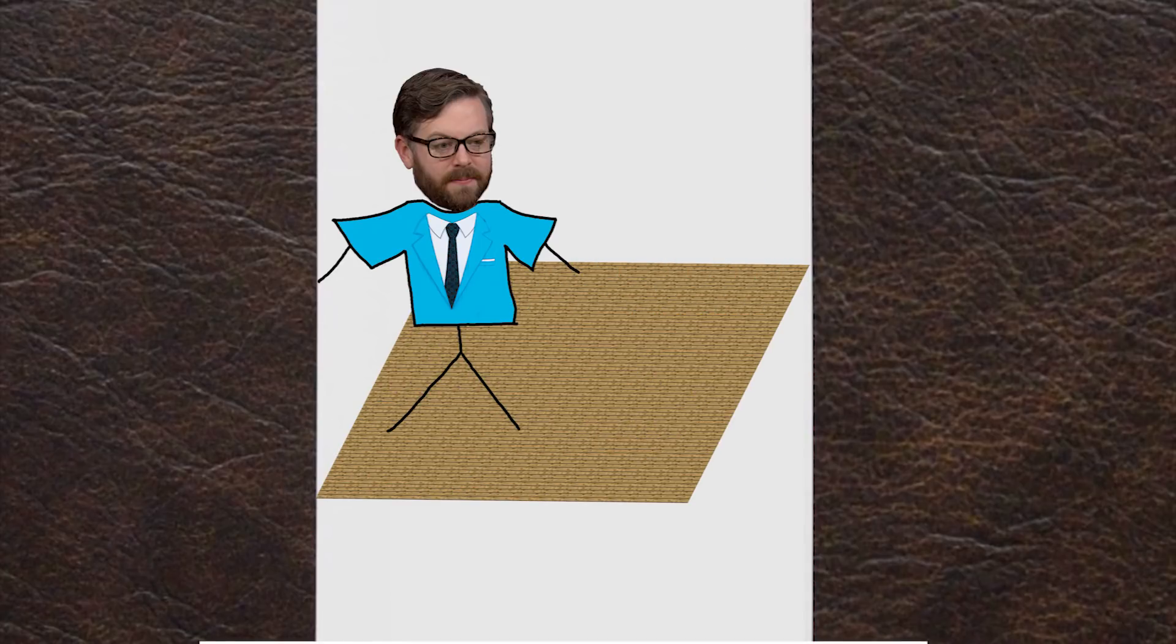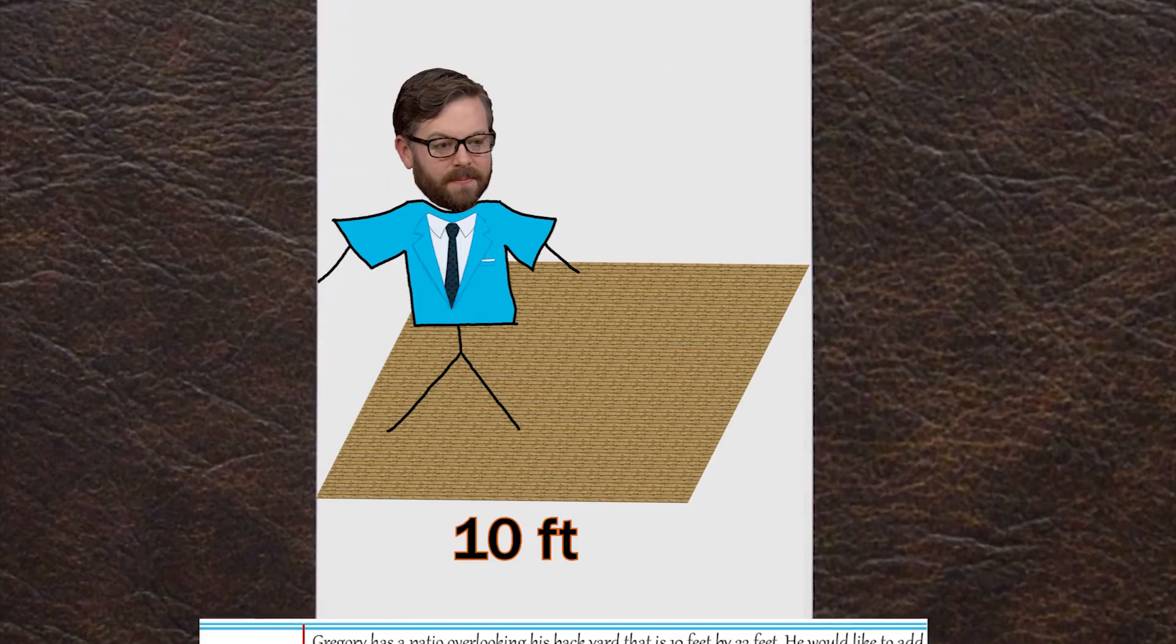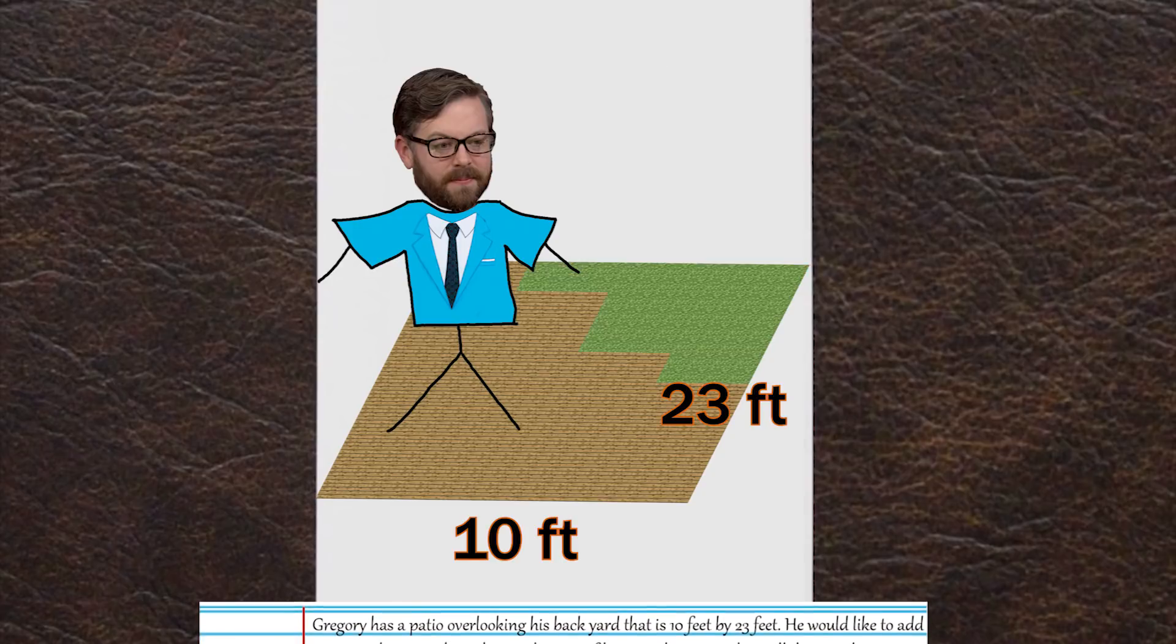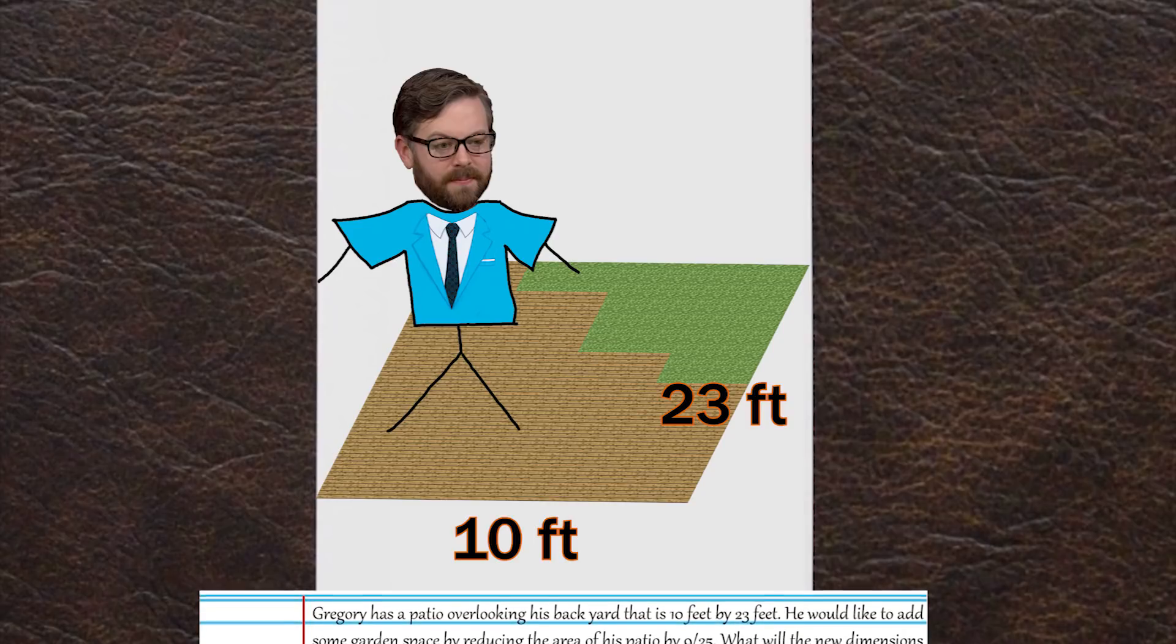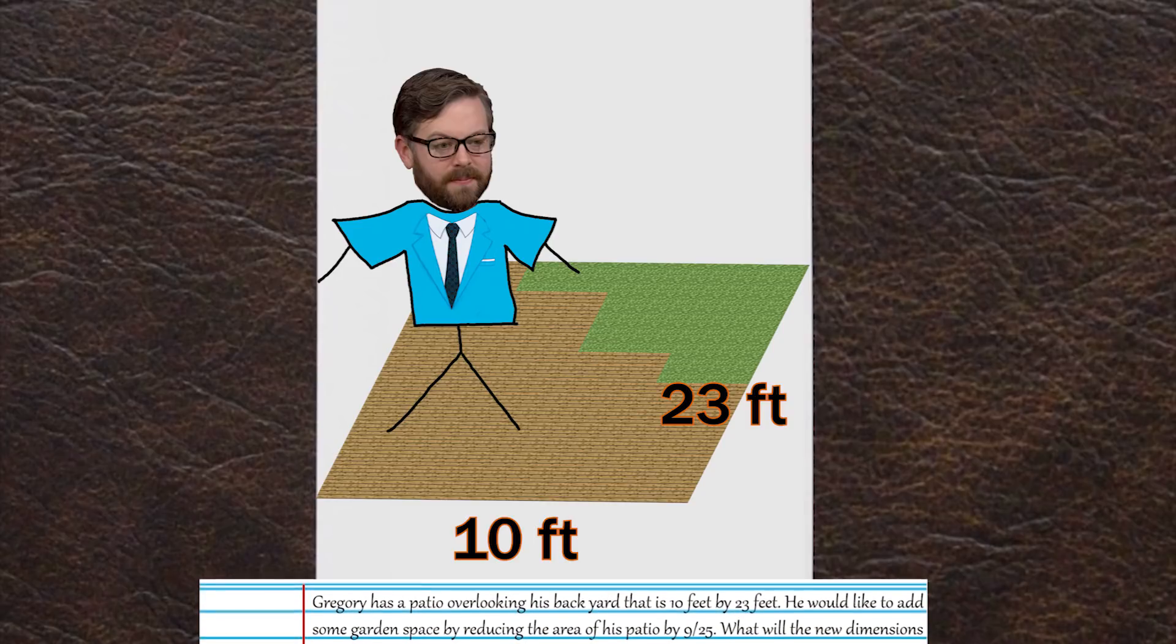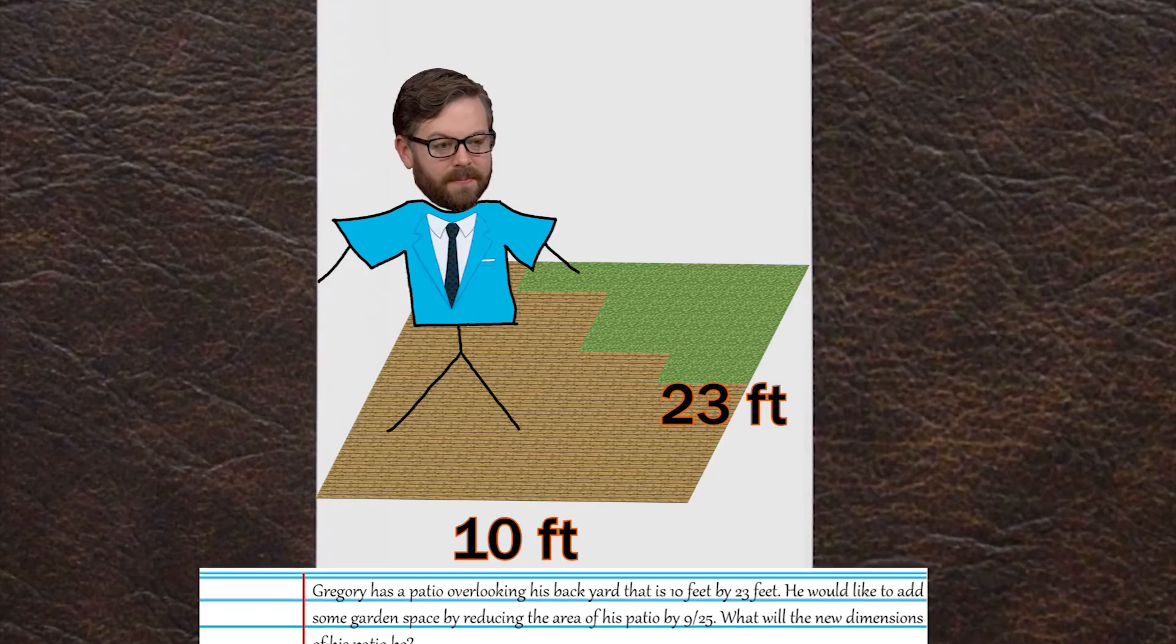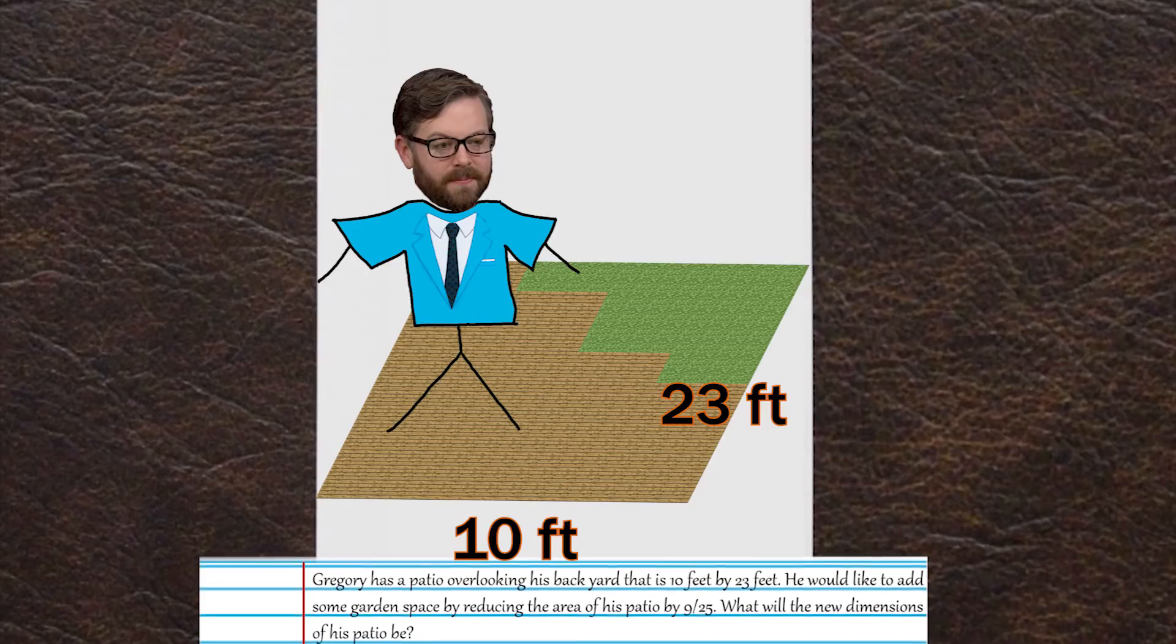Gregory has a patio overlooking his backyard that is 10 feet by 23 feet. He would like to add some garden space by reducing the area of his patio by 9 over 25. What will the new dimensions of his patio be? Please show your work.